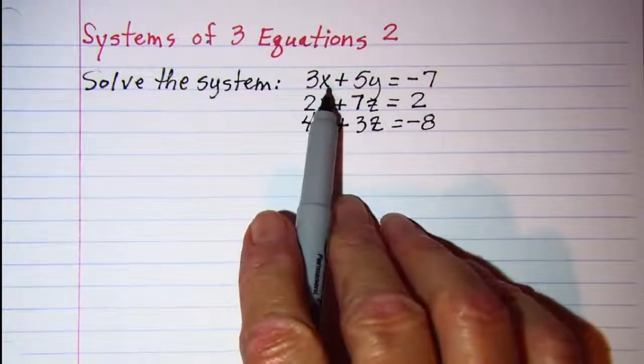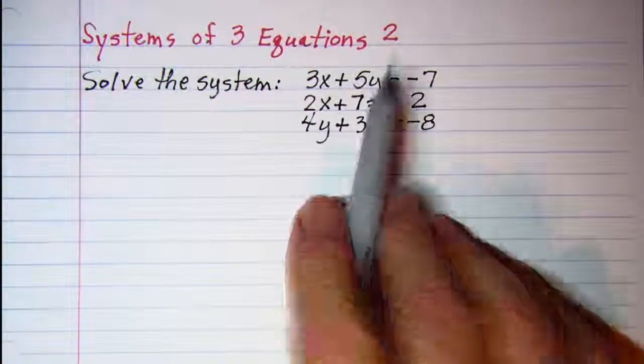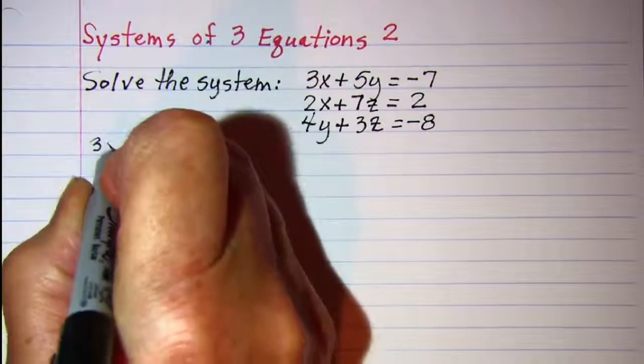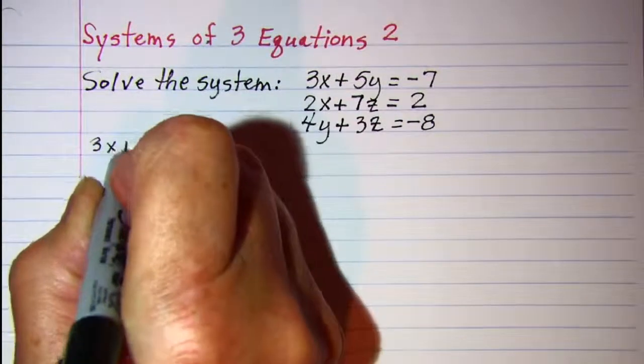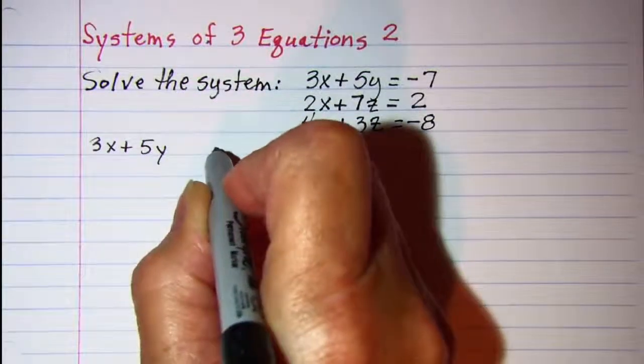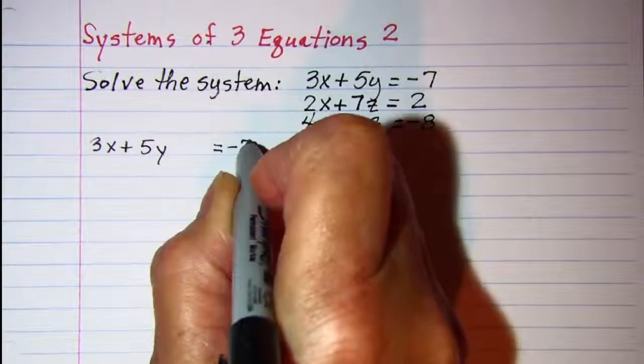So our first equation is missing z. I'm going to write 3x + 5y, leave a space, and put the -7 on the right side.